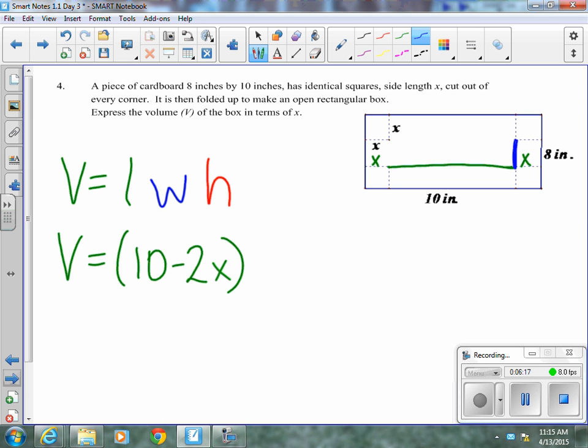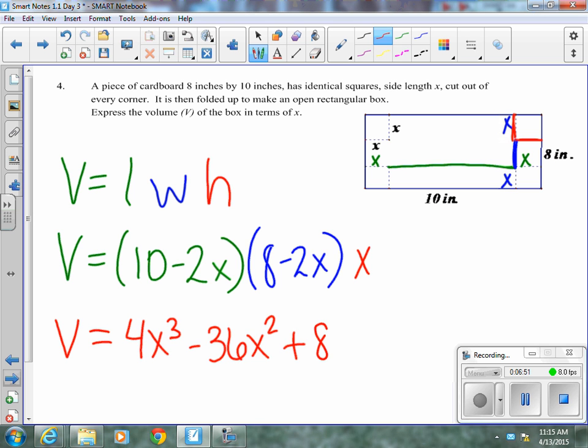The width will be this length once all those flaps are folded up. It started at 8. We cut an X off the bottom and an X off the top. So it's going to be 8 minus 2X. And our height, when we fold it all up, is going to be this length. Because that's how long our flaps are. That simply has a length of X. So there it is in factored form. If they want it as a polynomial, you should rewrite it to foil it all out. 4X cubed minus 36X squared plus 80X.